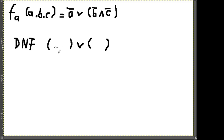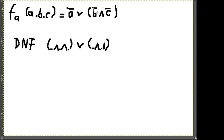In den Termen haben wir die einzelnen Variablen, verbunden mit Und. Das Und bindet stärker als das Oder. Bei der disjunktiven Normalform darf auf Klammerebene nichts mehr sein, was ein Oder hat – das Oder muss alles auf der obersten Ebene sein zwischen den einzelnen Termen.